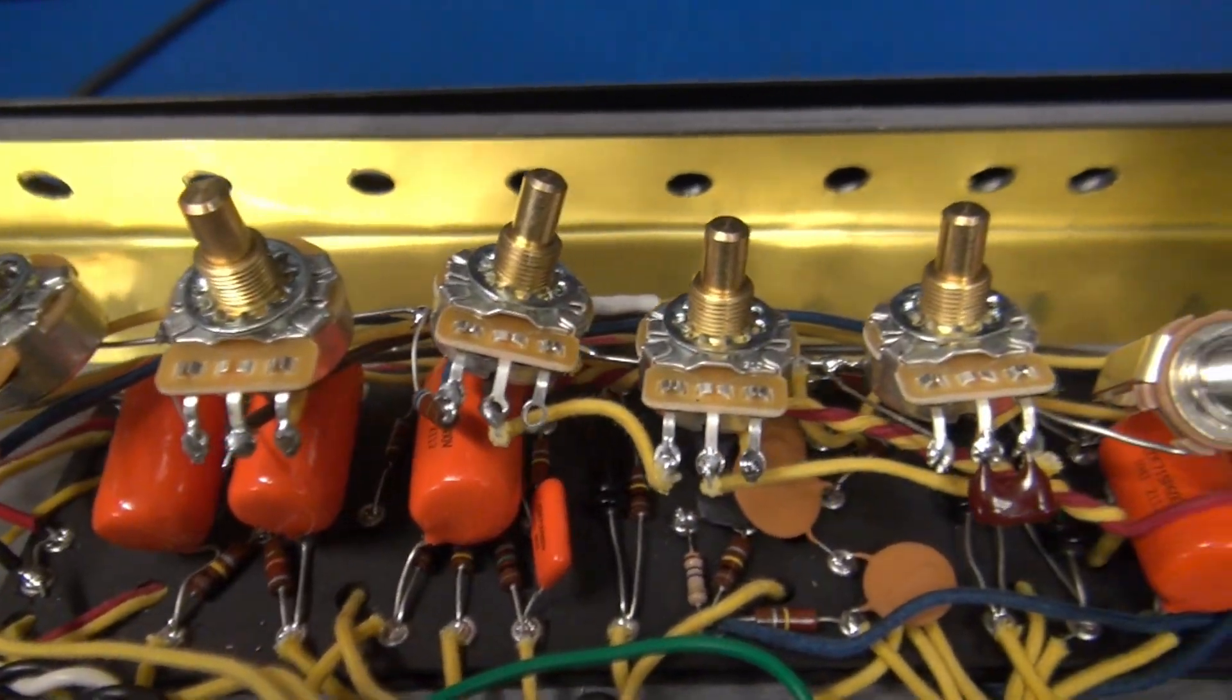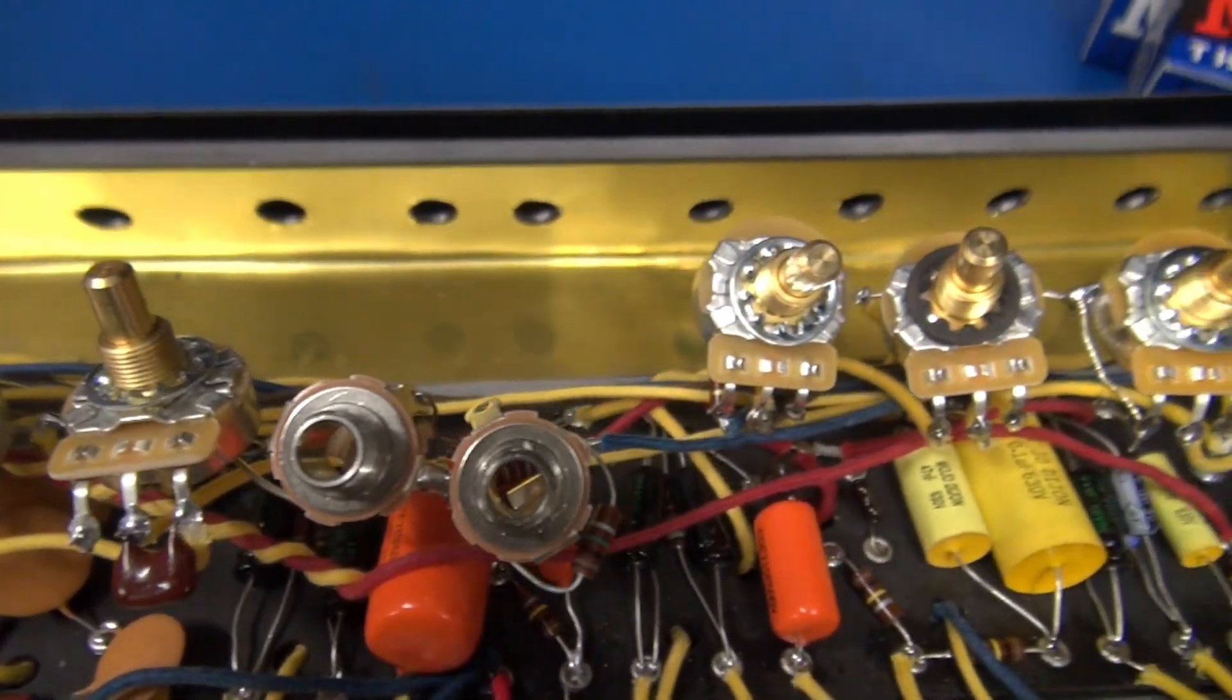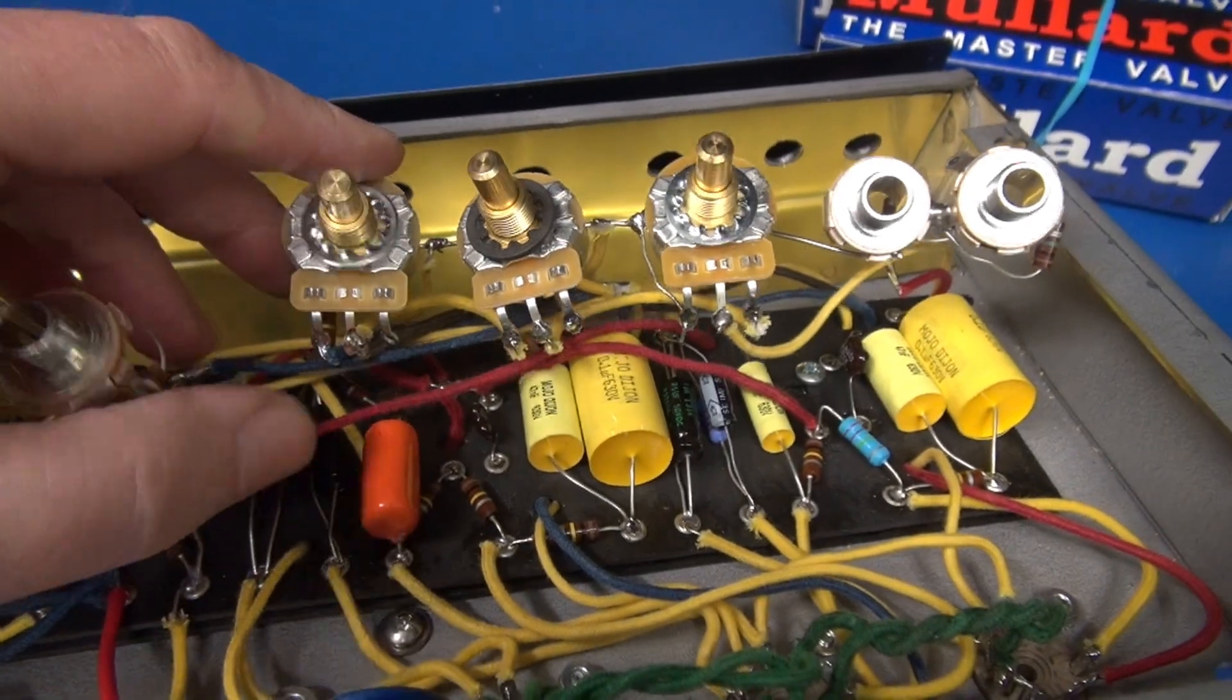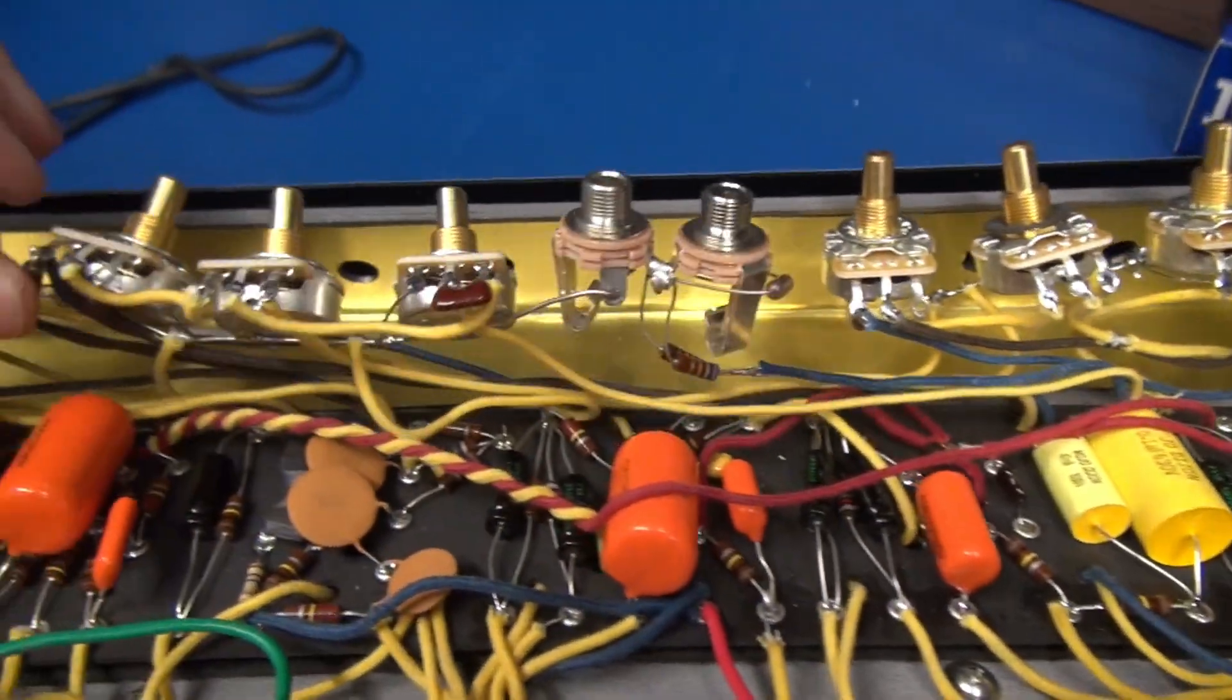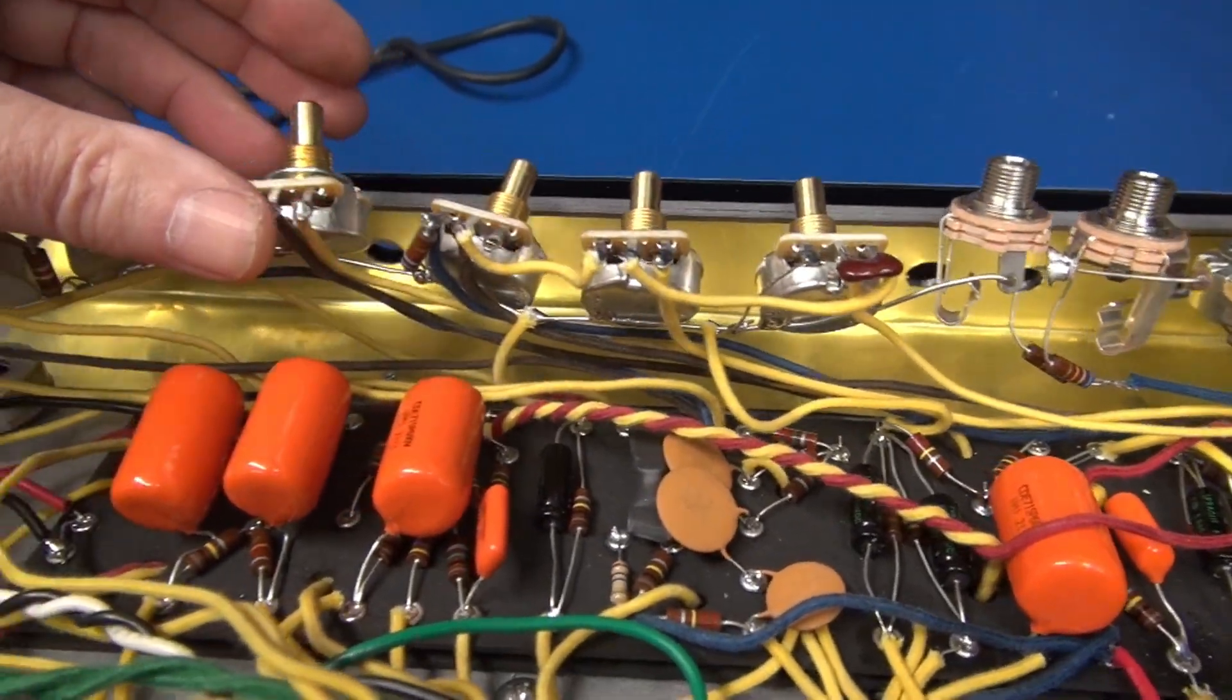All right, there's the drilled brass plate in its position, awaiting the controls, but first I need to remove that ground bus wire from the back and get all the grounds separated.